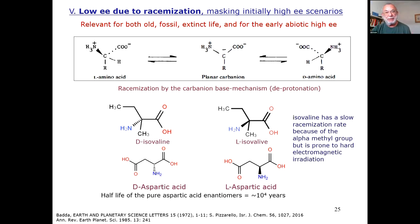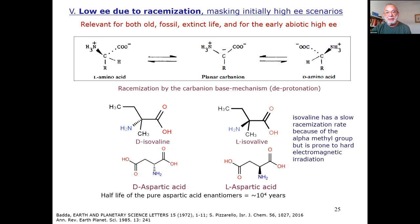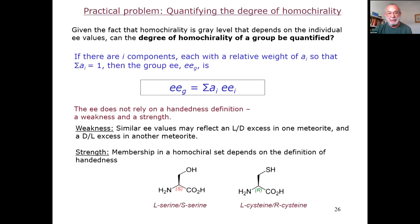The final parameter that dictates the enantiomeric excess is racemization. Racemization can kill and mask initially high enantiomeric excess scenarios. Aspartic acid, for instance, racemizes with a half-life of 10 to the fourth years. Isovaline, found in Murchison, barely isomerizes, and this is probably one of the reasons that the L-excess is detected and that we have an enantiomeric imbalance there.